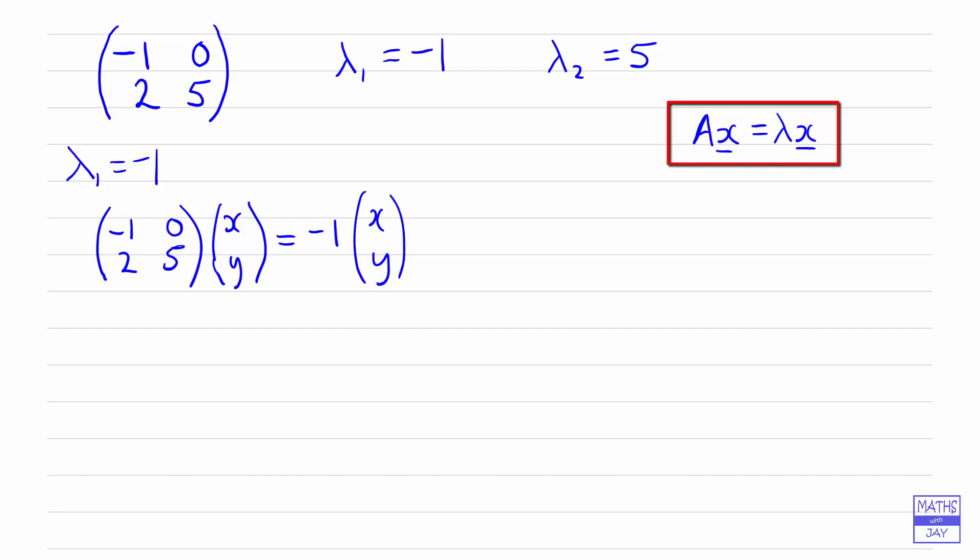That gives us two equations. If we look at the first one, that doesn't really tell us anything, because multiplying the first row of the matrix by the column vector gives us minus 1 times x on the left-hand side, and on the right-hand side we also get minus 1 times x — so negative x equals negative x, which tells us nothing.